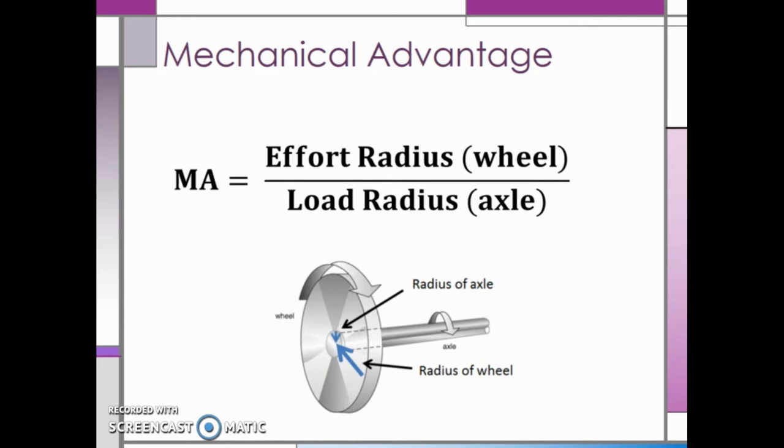The mechanical advantage of the wheel and axle is equal to the effort radius, or the radius of the wheel, divided by the load radius, or the radius of the axle. This will always give us a mechanical advantage greater than 1.